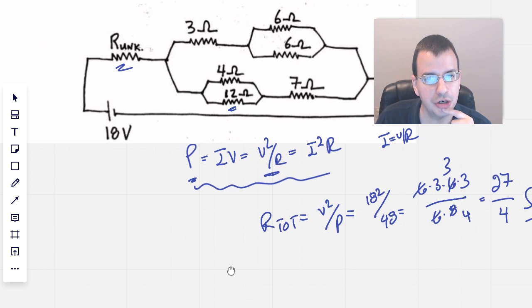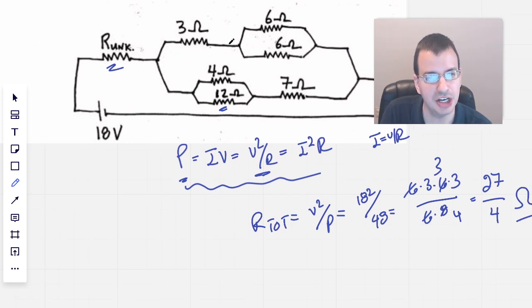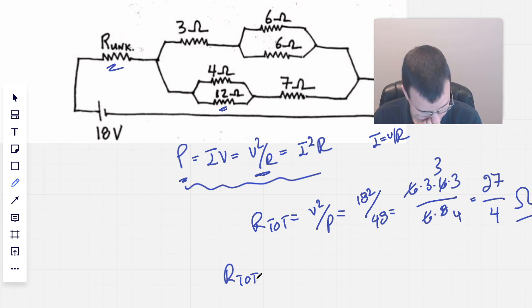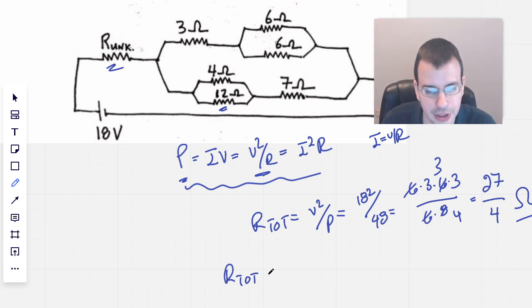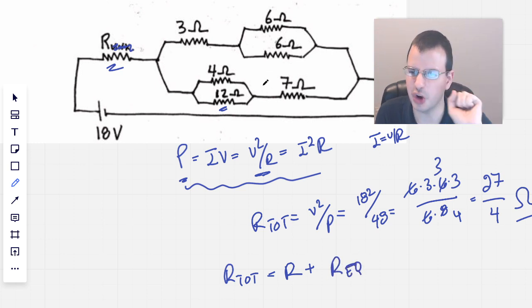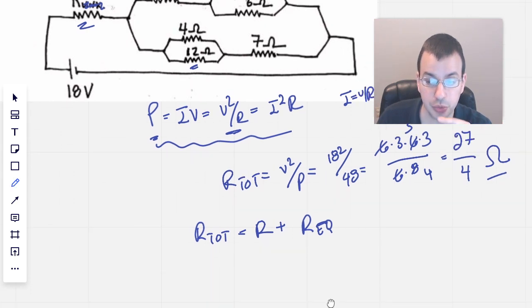Now I'm going to write this as an equivalent circuit. R total equals R unknown plus R equivalent. From this we know what R total is. We don't know what R unknown is, but we can find R equivalent. So what we want to do is start reducing this to an equivalent circuit.